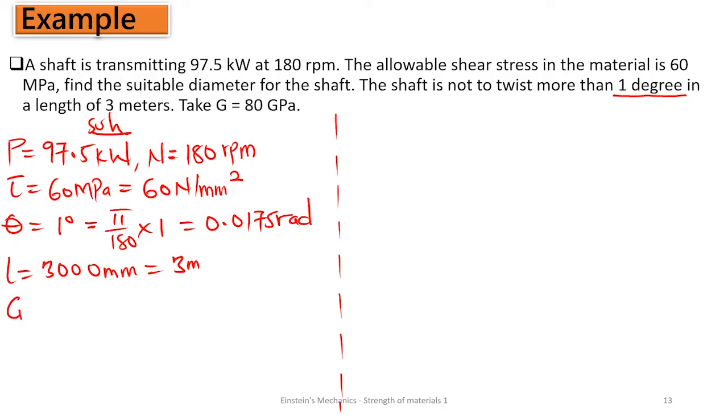We have G given as 80 gigapascal, which in terms of millimeters is 80 kilonewton per millimeter squared. So all parameters are given. We have to find the diameter of the shaft.